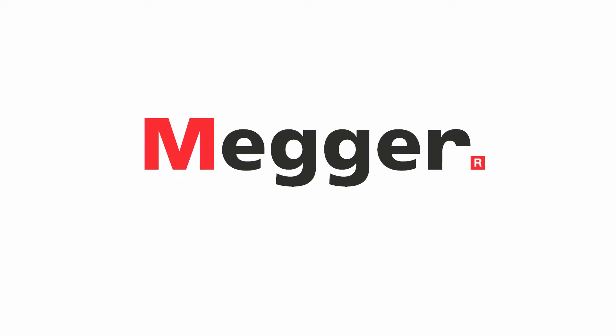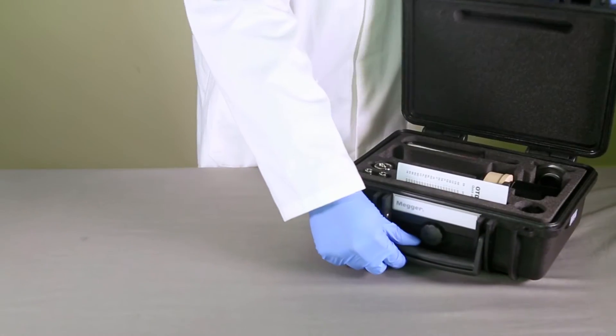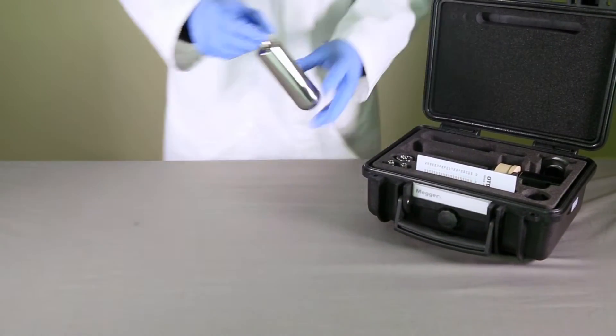This video shows what is in the box for the oil tan delta cell components. The test cell comes in a rugged transport case. Inside the case you will find the following cell components.